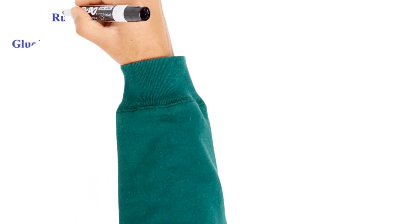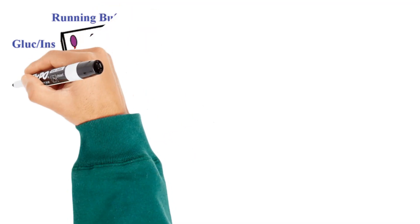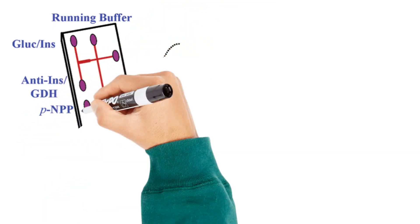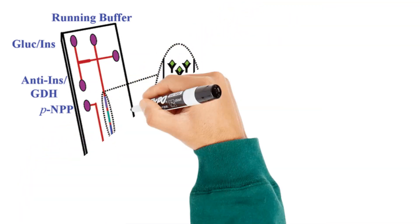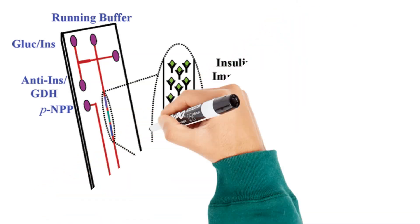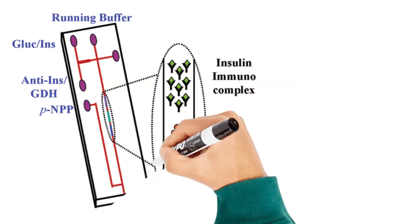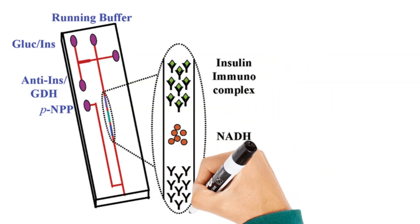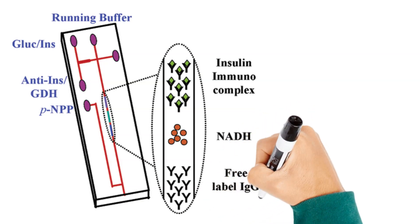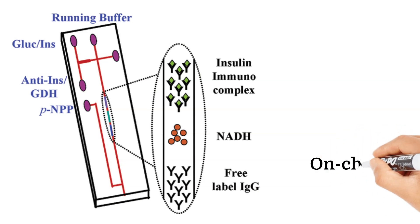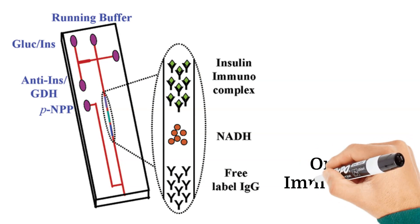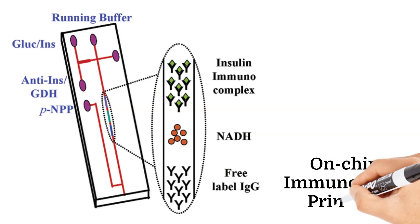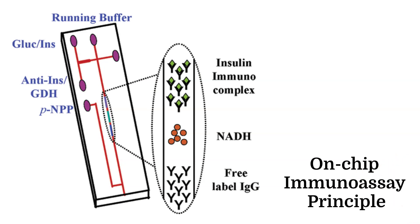On-chip immunoassay is a recently developed microfluidic device that combines immunoassay and enzymatic techniques for simultaneous measurement of glucose and insulin. Labeled anti-insulin antibodies bind to insulin from the sample, while glucose dehydrogenase reacts with glucose in the presence of NAD+ as a cofactor. An electrophoretic step separates the antibody-antigen complex, unbound antibodies, and produced NADH. Alkaline phosphatase then reacts with its chromogenic substrate p-nitrophenyl phosphate, and the final products p-nitrophenol and NADH are measured, proportional to insulin and glucose respectively.